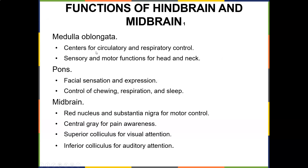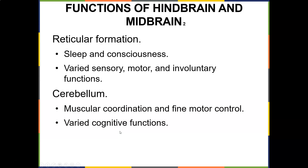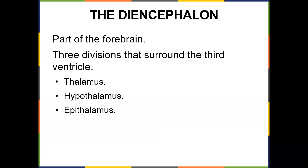The medulla oblongata: centers for circulatory and respiratory control, sensory and motor functions for the head and neck. The pons: facial sensation, expression, control of chewing, respiration, and sleep. The midbrain: red nucleus, substantia nigra, superior colliculus for visual attention, inferior colliculus for auditory attention, and the reticular formation for sleep and consciousness — paired sensory and motor involuntary functions.